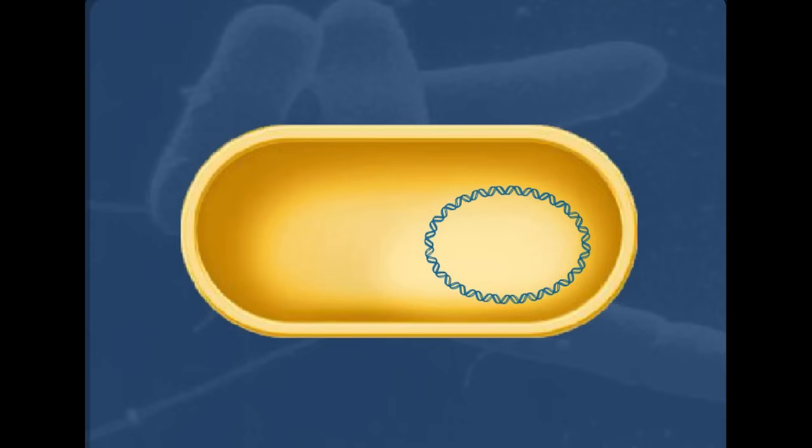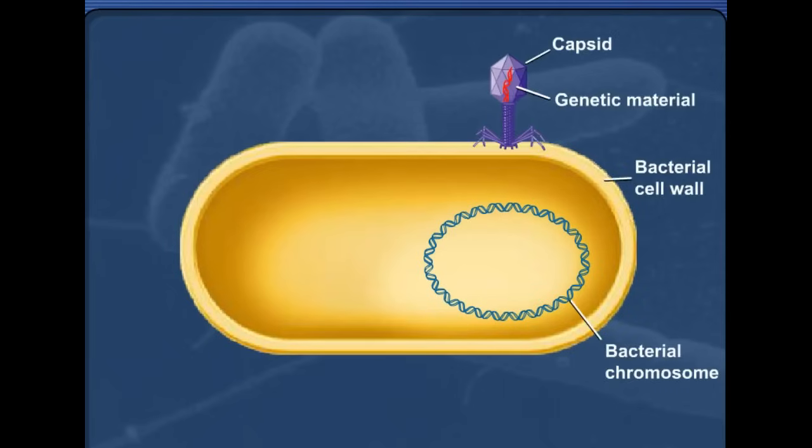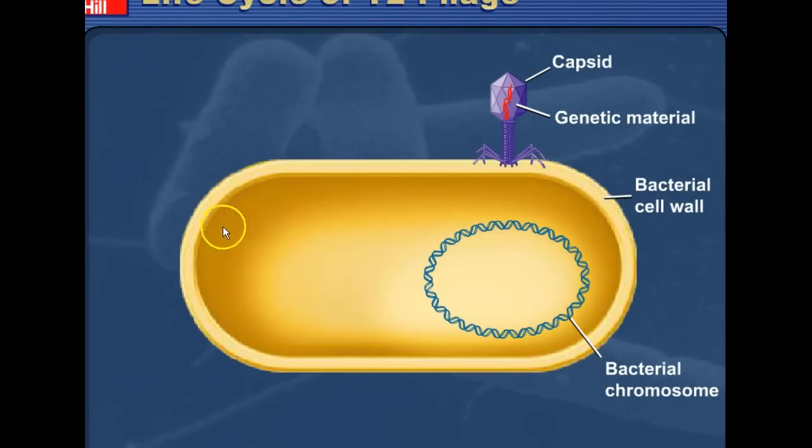So to give you a sense of what's going on here, we see that here we have a bacteria. So this is the bacteria right here, and this is the chromosome of the bacteria, and this would be a bacteriophage. This is the virus that attacks the bacteria.